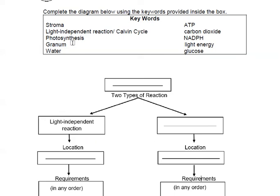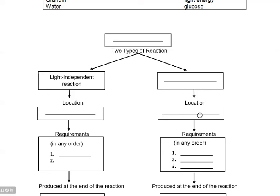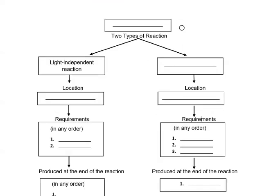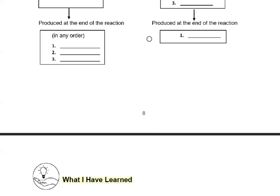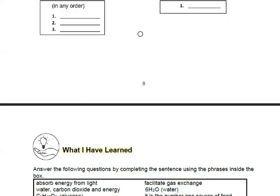Then you answer What's More. You complete the diagram below using the keywords provided inside the box. So it's all here, all the keywords, and just copy this and answer with your, you just choose the words here for your answers. So copy this on the yellow pad paper, the diagram.